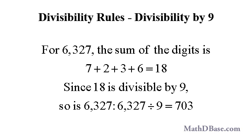If the sum of the digits of a whole number is divisible by 9, then the number is divisible by 9. For example, in the number 6,327, the sum of the digits is 7 plus 2 plus 3 plus 6, or 18. Since 18 is divisible by 9, 6,327 is divisible by 9, and 6,327 divided by 9 equals 703.